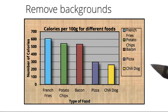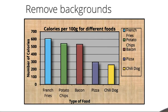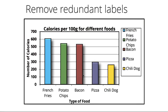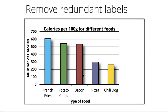Let's walk through, step by step, how we can simplify this visualization and increase its data-to-ink ratio. First, let's remove the wood background from the outside and the gray background from the inside, increasing contrast and legibility. We can also remove redundant labels, such as the legend and some of the titles, as this information is encoded elsewhere.